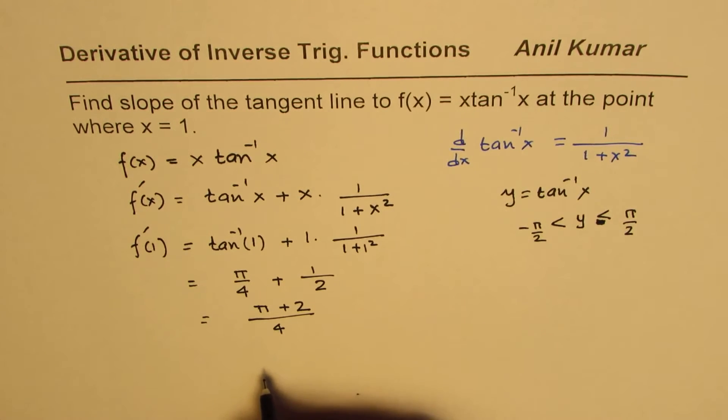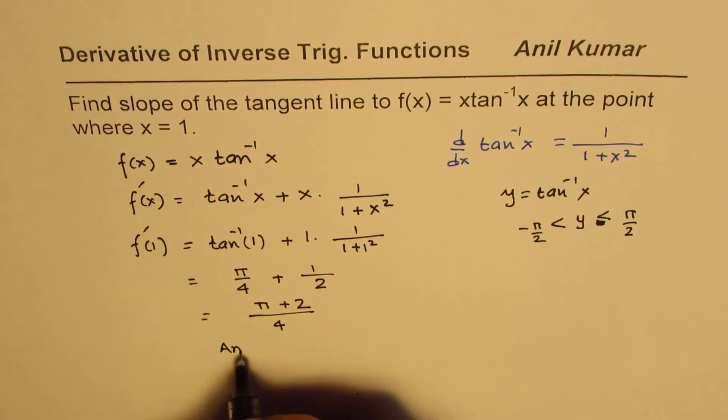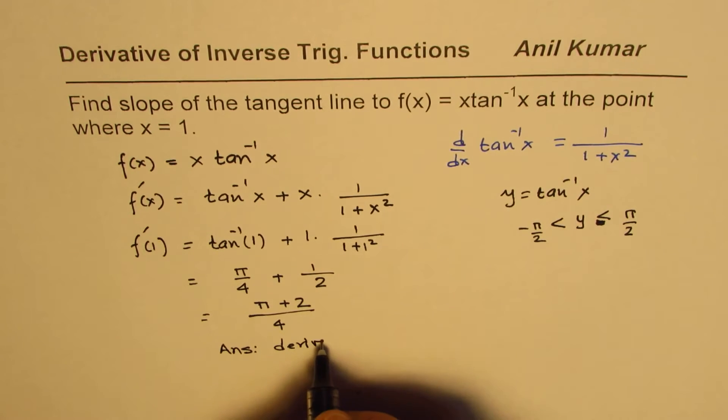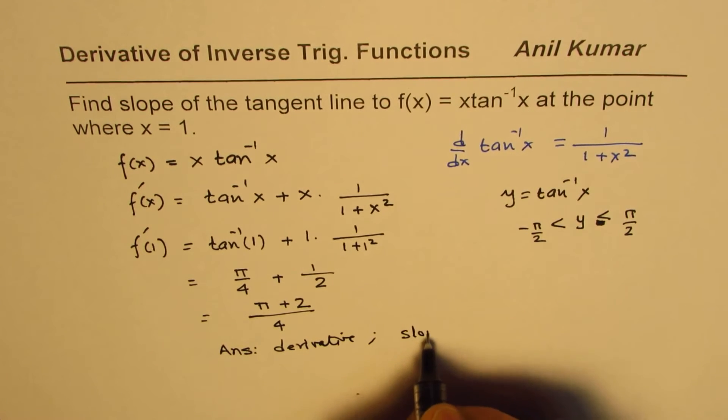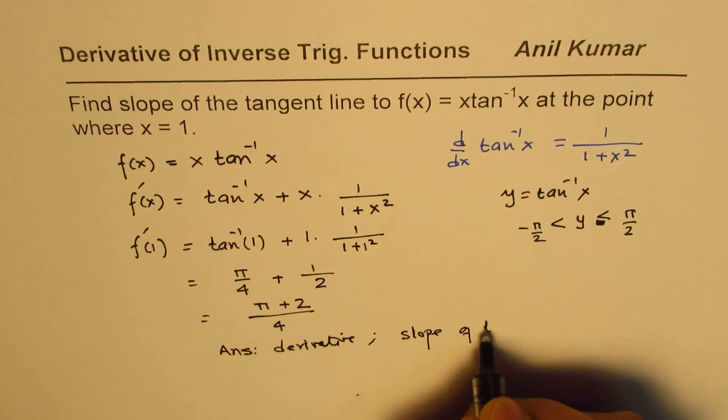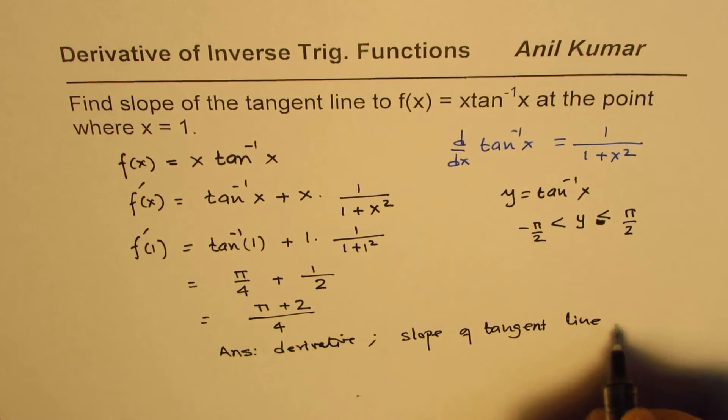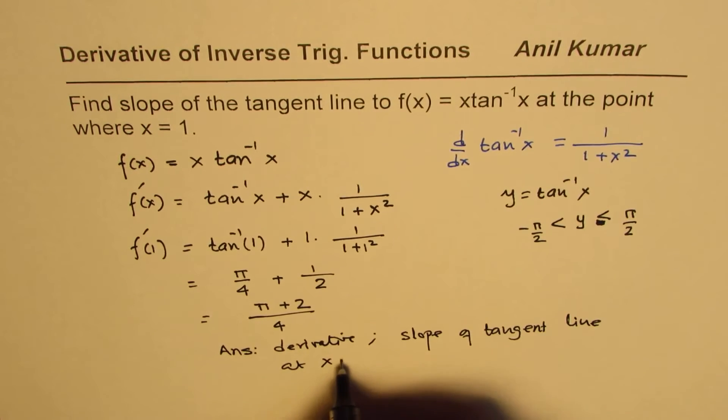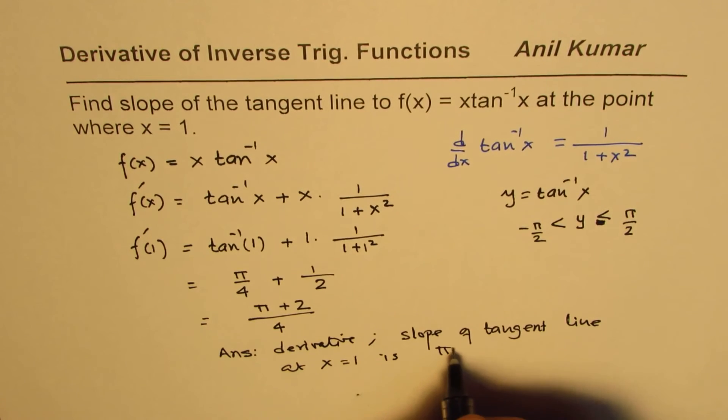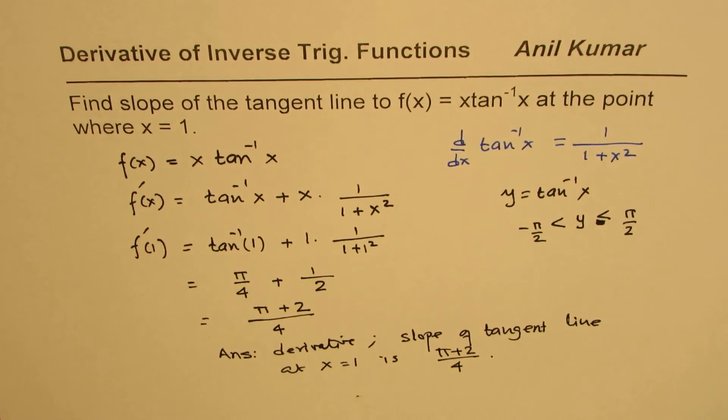And therefore, we get the answer that the derivative, which is the slope of tangent line at x = 1, is (π + 2)/4. So that is how you can solve it.